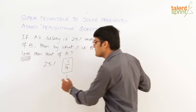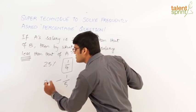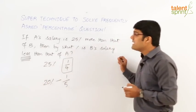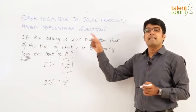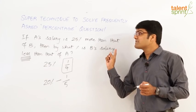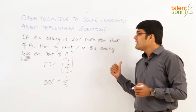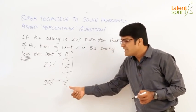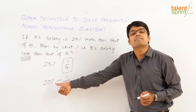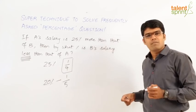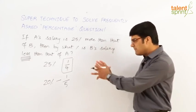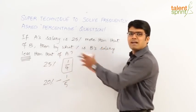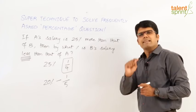1/5 is what percentage? It is 20%. So we can say: if A's salary is 25% more than B, then B's salary is 20% less than that of A.